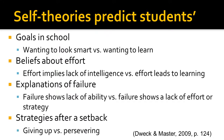Self-theories also predict students' strategies after a setback. It's easy for students with fixed views to give up. They believe there's no reason to try harder if they don't have the intelligence or natural ability to succeed. Students with changeable views of intelligence are more likely to persevere and continue trying because they believe that with more effort or better strategies, they can succeed.